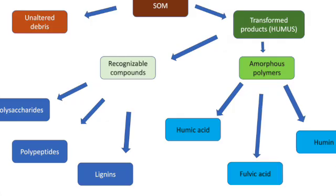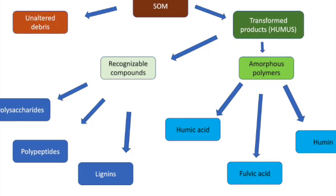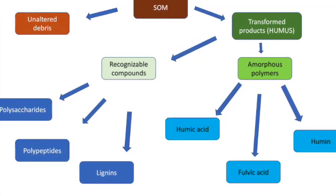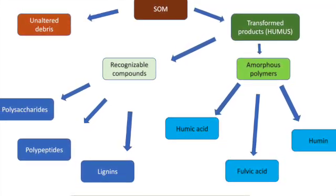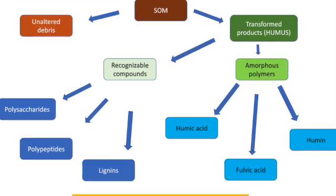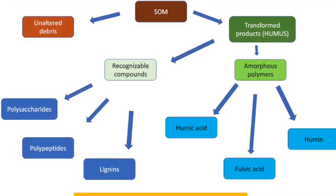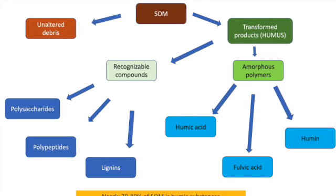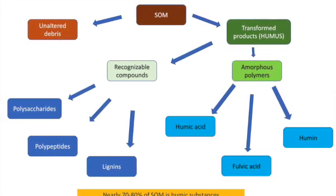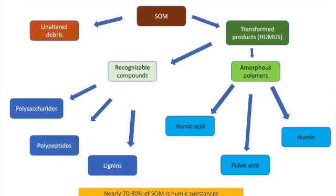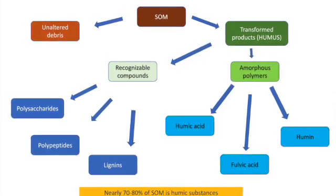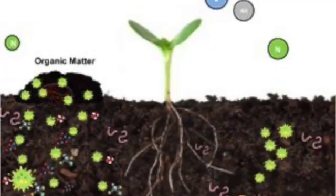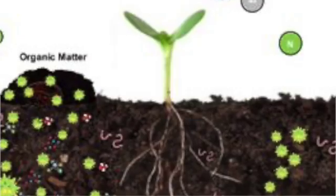Imogolite is like allophane but has a higher degree of order in its structure. Ferrihydrite is a non-crystalline oxide. The fourth component of soil colloid is soil organic matter. Soil organic matter is a transformed product known as humus, formed by the process of humification, which forms amorphous polymers like humic acid, fulvic acid and humin. Nearly 70–80% of soil organic matter is humic substances.